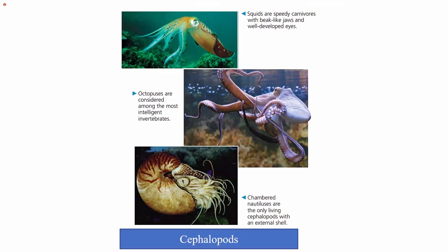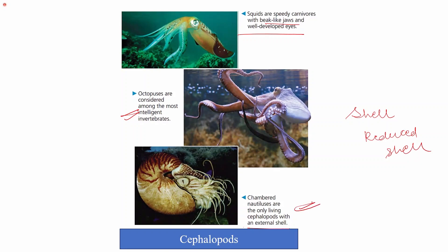Examples include squids — speedy carnivores with beak-like jaws and well-developed eyes — and octopi, considered among the most intelligent invertebrates. Chambered nautiluses are the only living cephalopods with an external shell, while most other cephalopods have a reduced or internal shell.